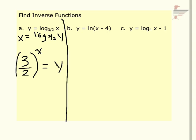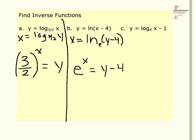Part b: I have y equals the natural log of quantity x minus 4. First you switch x and y, and then you solve for y. I can't divide by the natural log, and I can't add 4 because the y minus 4 is in parentheses — it's all a part of that natural log. So all I can do, because I'm stuck, is go to exponential form. The base of the natural log is e, so that's the base of my exponential function. It equals x, so that becomes my power. What my exponential function equals is what I'm taking the natural log of — in this case y minus 4. Last, I can add that 4 over so it's solved for y. That exponential function is the inverse of the natural log function.